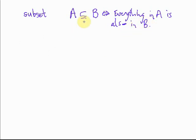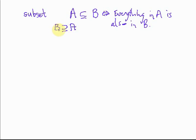That's all that sign means: A is a subset of B. Sometimes you'll see it written the other way around. If the bottom of the U is pointing towards the A, then A is the subset of the set which appears on the other side of that symbol.